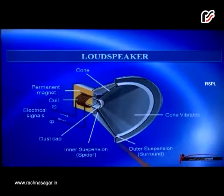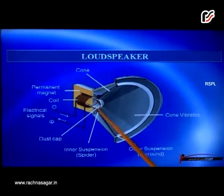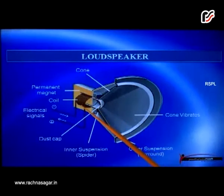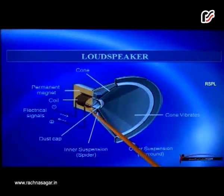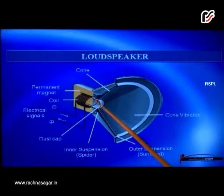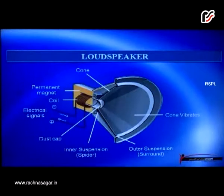This device works on the principle of electromagnetic induction. Factors that affect the strength of the electromagnet include the number of turns on the coil, the size of the coil, and the potential supply to the coil. The induced current is found to be highest when the direction of motion of the coil is at right angles or perpendicular to the magnetic field. Michael Faraday discovered how moving magnets can be used to generate electricity.